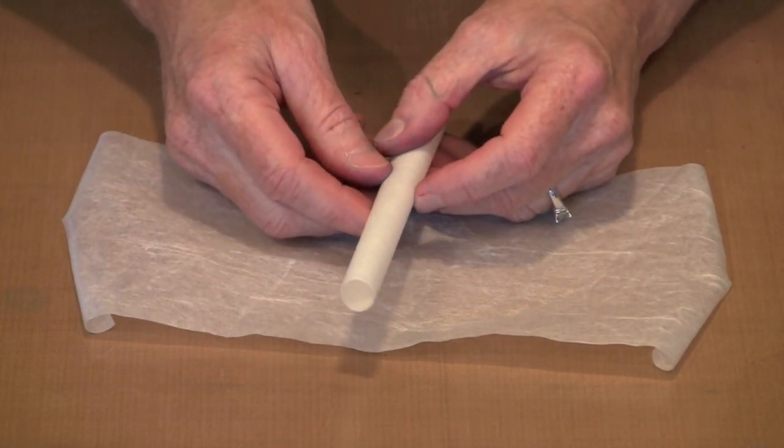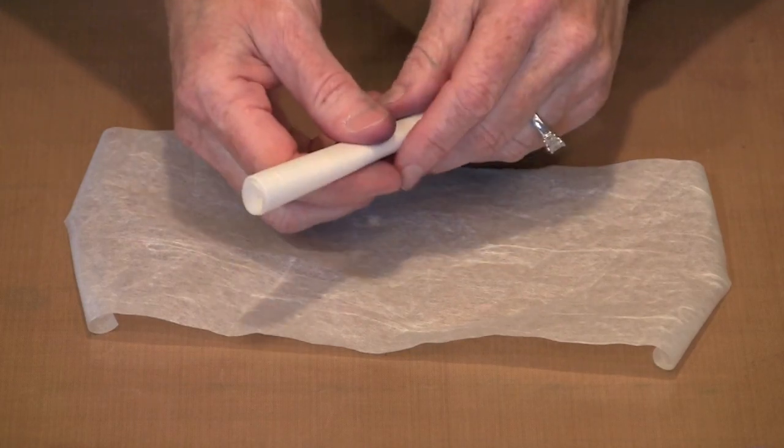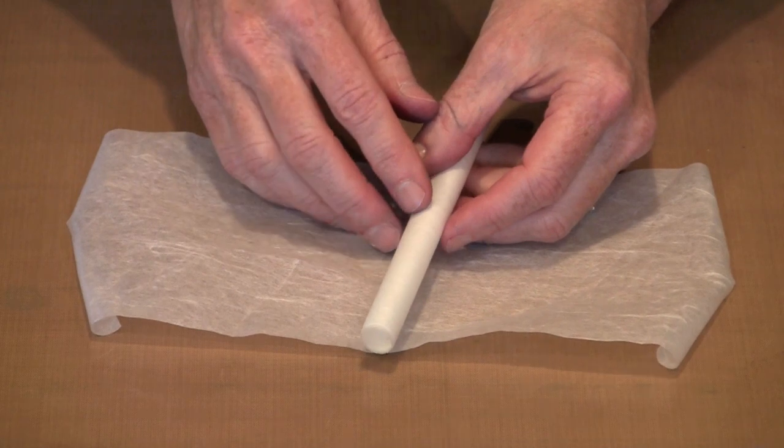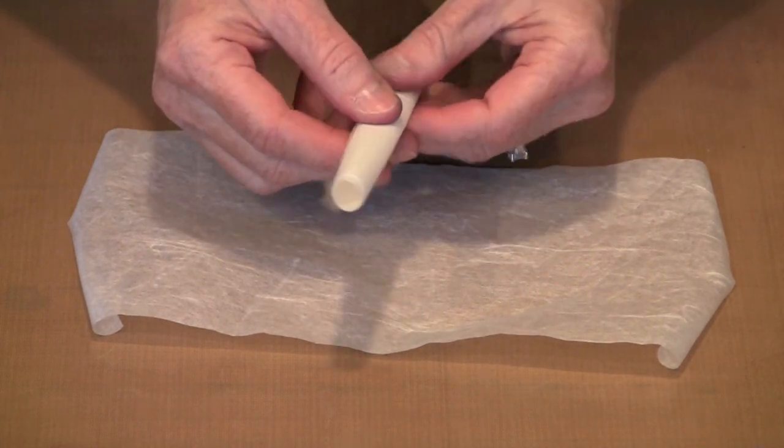When you're working with a craft pack and it's rolled up like this, what you have to do is either tape it to your surface to work on it, or crumple it, and I'll show you that in one second.